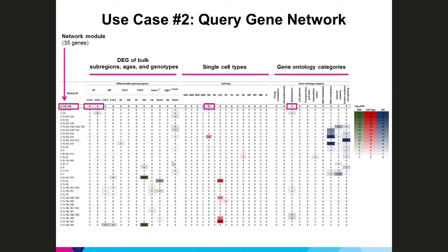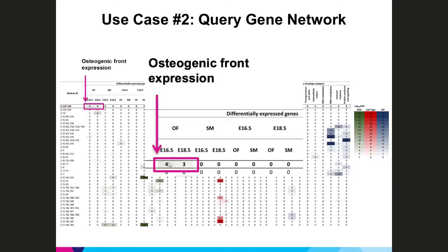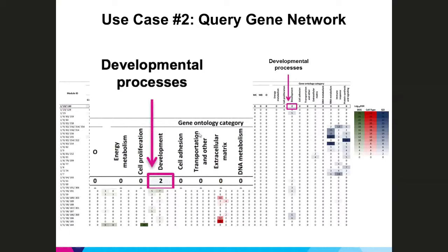A TSNE plot of the single cell analysis of the wild-type E18.5 frontal suture shows that IBSP expression highlighted in red corresponds to cells identified as osteoblasts. Co-expression network analysis of the bulk RNA-seq data places IBSP in a sub-module highly enriched for osteoblast-related genes including SMPD3, SLC13AC5, and CAR1, with which IBSP has direct connections. Scanning along the row of the IBSP network module confirms significant expression in the osteogenic front at both E16.5 and E18.5 but not the suture mesenchyme, with no differential expression between ages, and the developmental process gene ontology term is associated with this module.